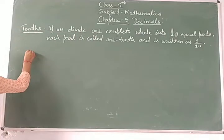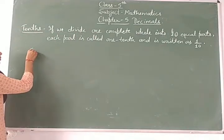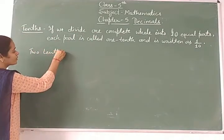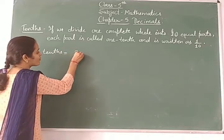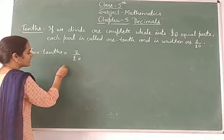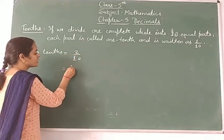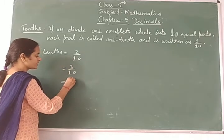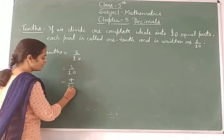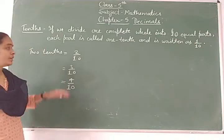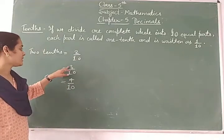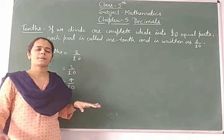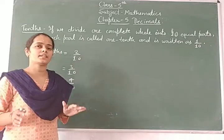Similarly, if we write two-tenths: two upon ten. Three-tenths is equal to three upon ten. Four-tenths is equal to four upon ten. Five-tenths, six-tenths follow the same pattern.